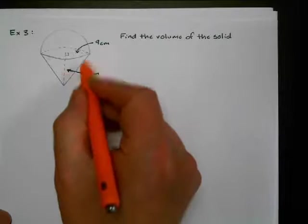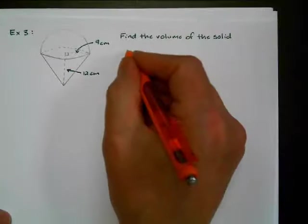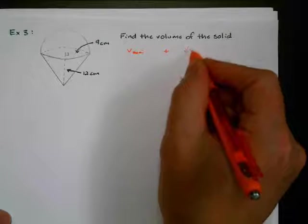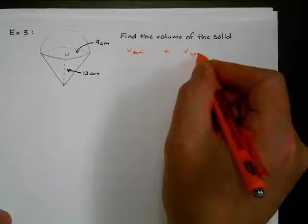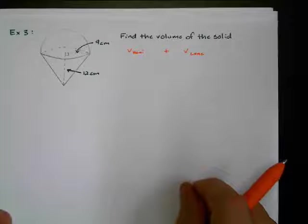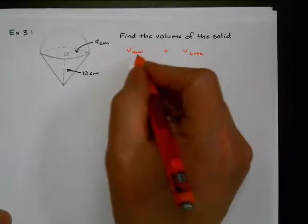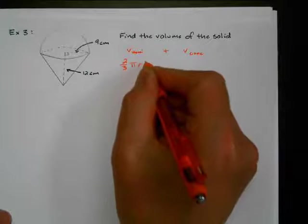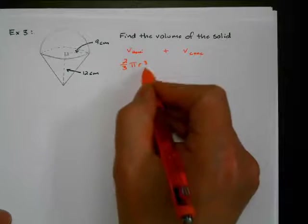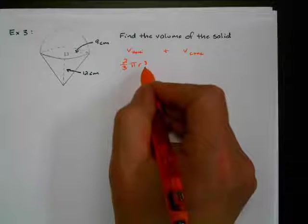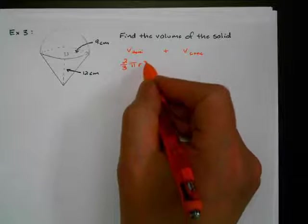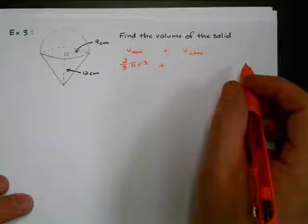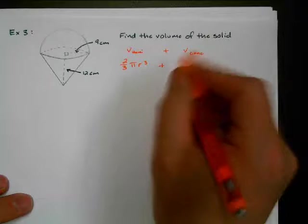So I'm going to find the volume of the hemisphere, and add to that the volume of the cone. And that should give me the volume of the entire solid. So a hemisphere's volume is 2/3πr³. Don't forget third, not the second. A lot of people make that mistake and do second. Remember, it's supposed to be in units cubed, so that's why we know it's to the third power.